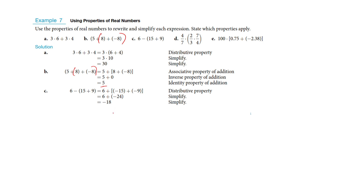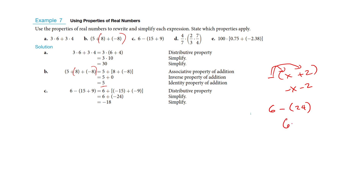Looking at example C, they are distributing a negative sign through — so that's important. Like if you had x plus 2, I'm distributing that negative and it would become negative x minus 2. In this case, doing that at the front end is actually just making it harder, so I'm not sure I agree with that. I would have just done 6 minus the grouping symbol — that's like multiplying by a negative — so it's just 6 minus 24, and you get negative 18.